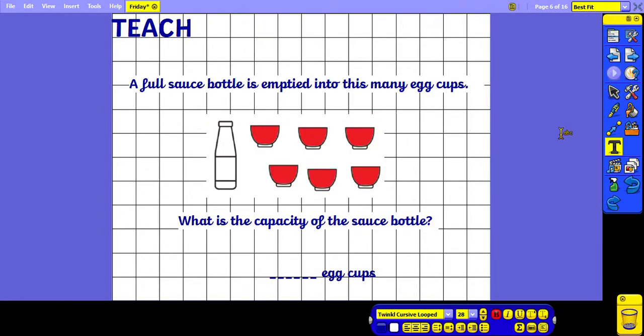This time we're told that a full sauce bottle is emptied into this many egg cups. What is the capacity of the sauce bottle? So the bottle has filled up one, two, three, four, five, six egg cups. So that tells us that the sauce bottle holds six egg cups of sauce.